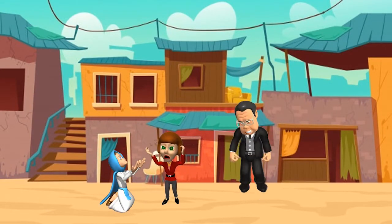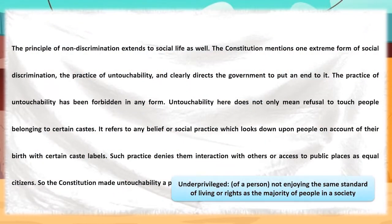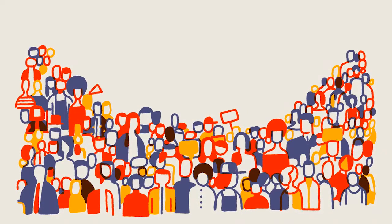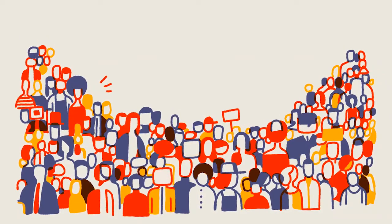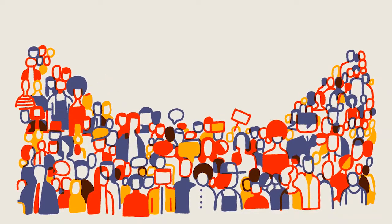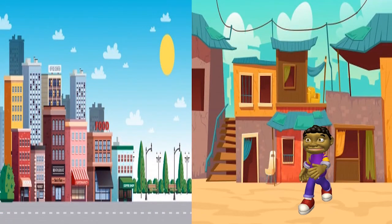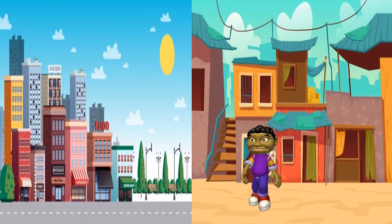The constitution also directs the government to end social discriminations like the practice of untouchability. Untouchability does not mean refusal to touch a person, but rather any practice of looking down upon underprivileged citizens of certain castes. Such people are prevented from accessing public commodities and public places. The constitution has therefore implemented it as a punishable offence.